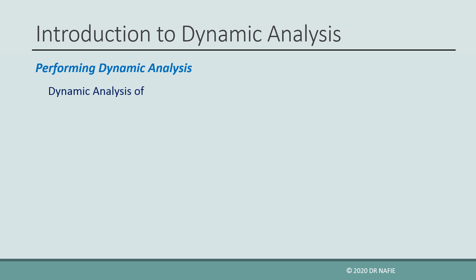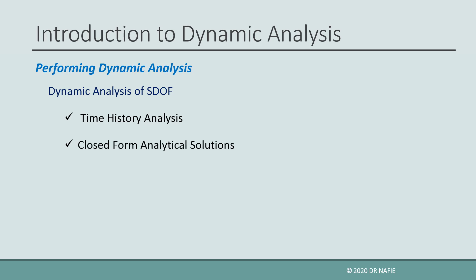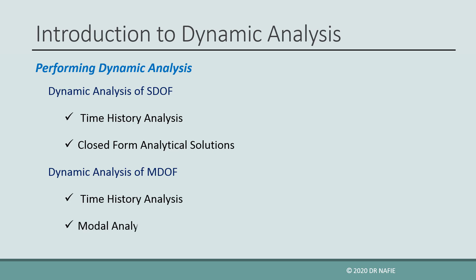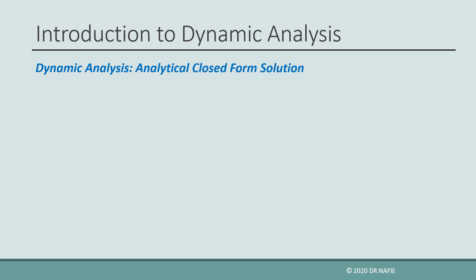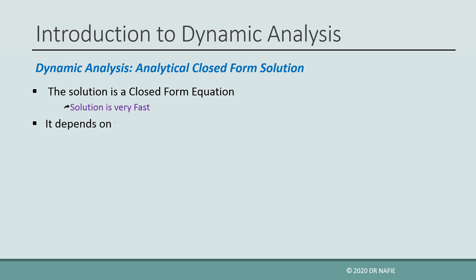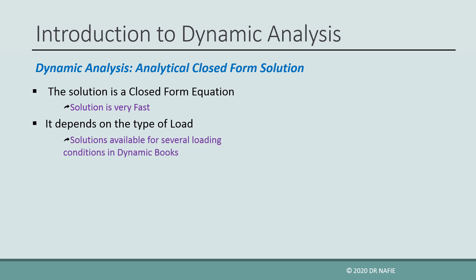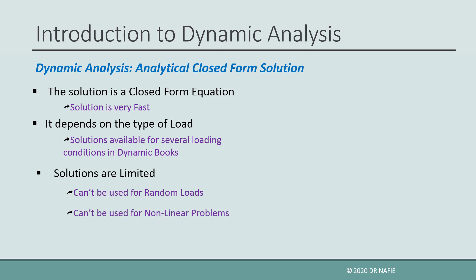For single-degree of freedom systems, dynamic analysis can be performed using the time-history method or using analytical methods found in dynamic books. Dynamic analysis of multiple-degree of freedom systems can be performed using the time-history method or using modal analysis. For analytical methods, the solution is a closed-form mathematical equation and therefore is a very fast method. However, the solution depends on the type of loading, and closed-form solutions are only available for several specific loading conditions on single-degree of freedom systems. This method is also limited — it cannot be used for all loading conditions such as random dynamic loads, and cannot be used for non-linear analysis.